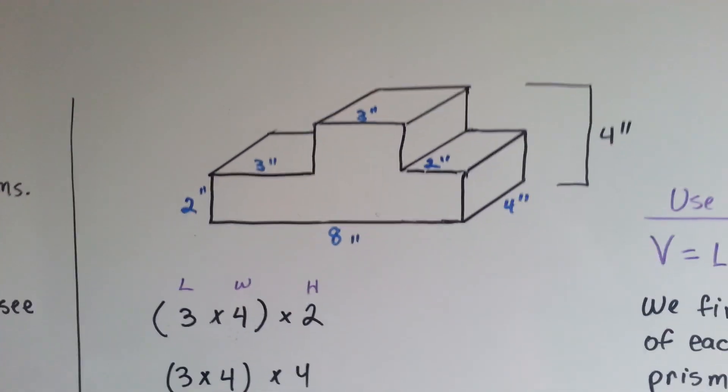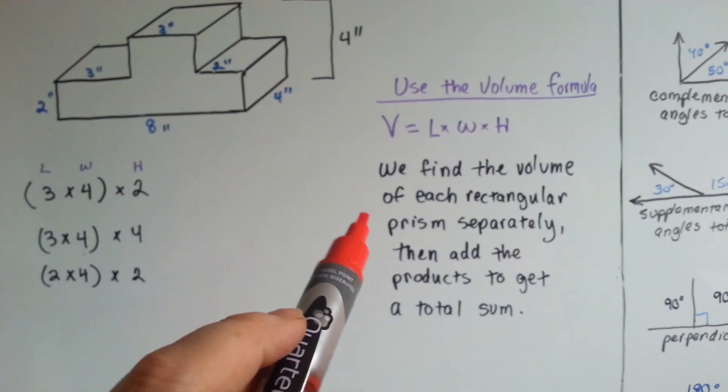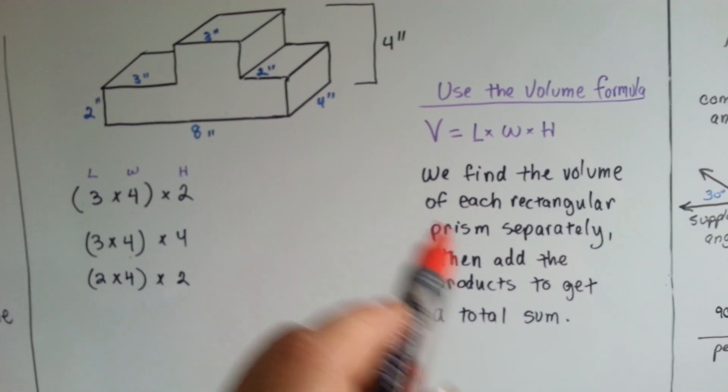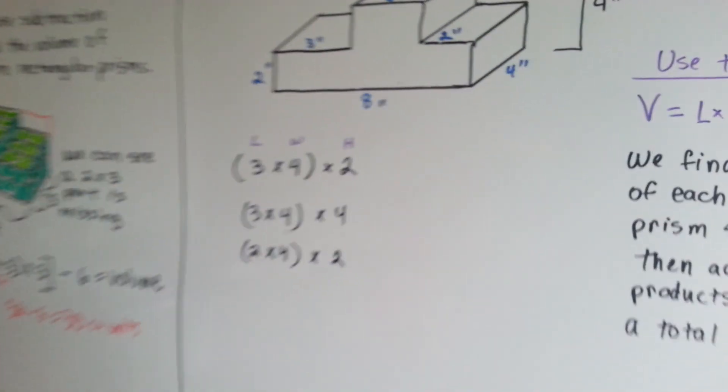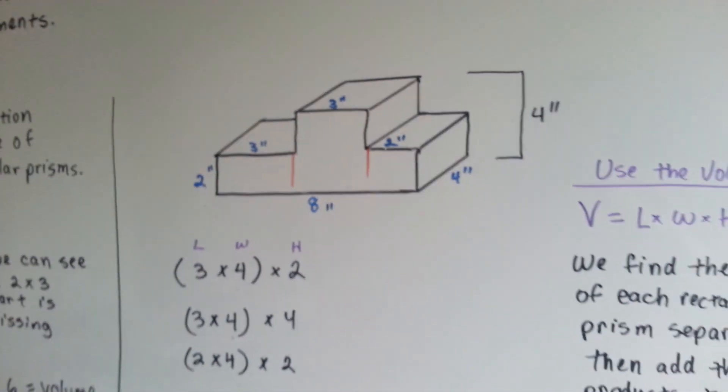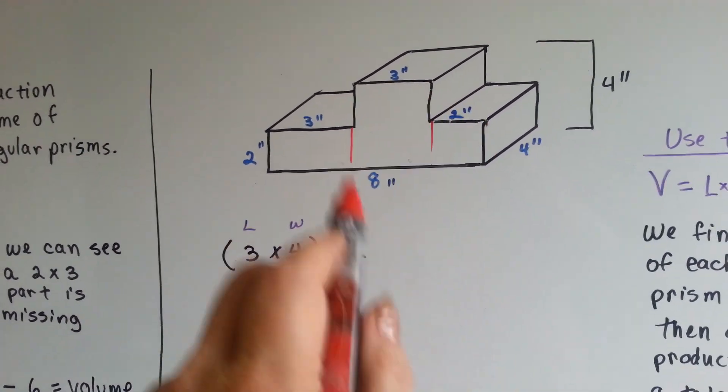Now, when you have a more complex one like this, what we need to do is use the volume formula, but we find the volume for each rectangular prism separately, then add the products to get the total sum. We split this into three different rectangular prisms and find the length, width, and height for each one, and then we're going to total them.